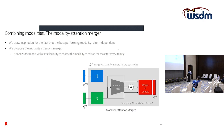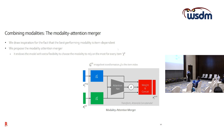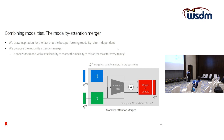Based on these results showing that which modality is better is item-dependent, we concluded that how we combine the modalities should also be item-dependent. We came up with a merger we refer to as the modality attention merger, which gives the model the flexibility for a given item to choose whether to rely more on the image or more on the text to predict item attributes.